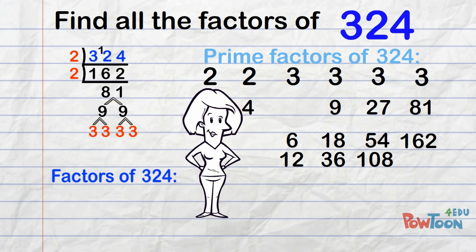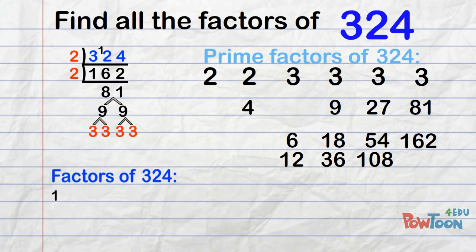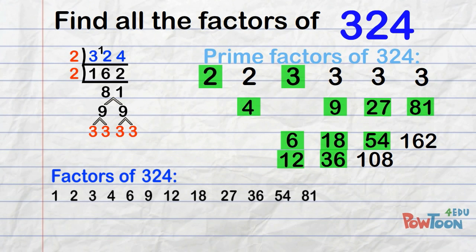Then we list the factors of 324 in ascending order. Start with 1, 2, 3. You know what you're doing with this. And 324 at the very end.